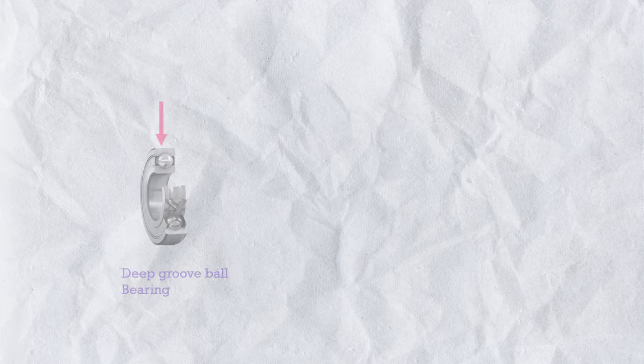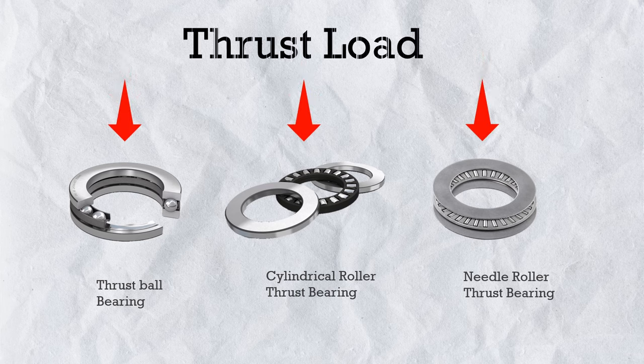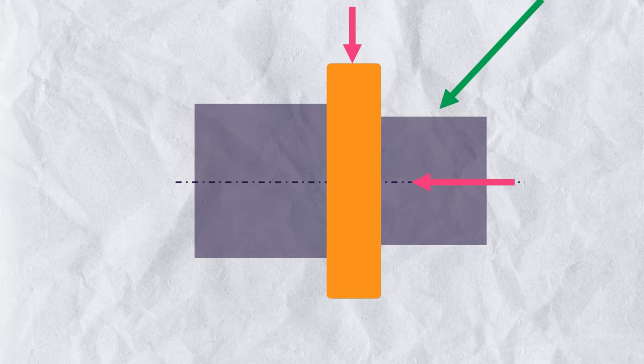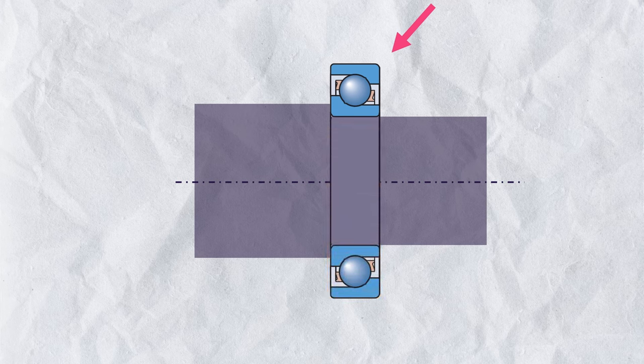As we have seen in the previous part of this bearing series, for pure radial load we use radial bearings, and for pure axial load we use thrust bearings. But in many applications, load can be at some angle, or the load can be a combined load — both pure radial and pure axial at the same time. As per physics and vectors, this is the same thing because the resultant load will be at an angle. As the load is at some angle, the rolling element of the bearing — the ball in this case — the ball's contact line, or load line, should also be at an angle to support the load better.